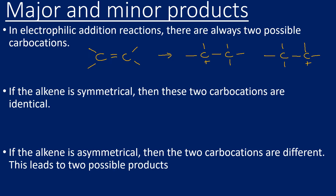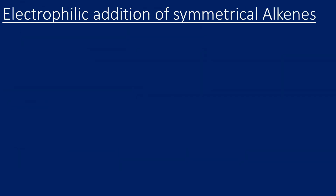If you're not happy with the terms symmetrical and asymmetrical, there is a video I've done on symmetrical and asymmetrical alkenes — I'll put a link in the description. To show what I mean, here is a symmetrical alkene — that's but-2-ene.